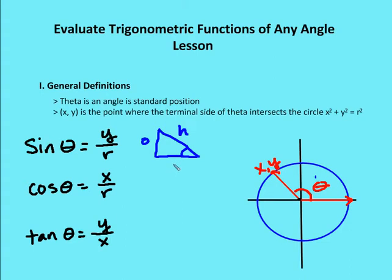In the case of cosine, it's going to be the adjacent side — the side adjacent to the angle in question — over the hypotenuse. And tangent is going to be the opposite side over the adjacent side.